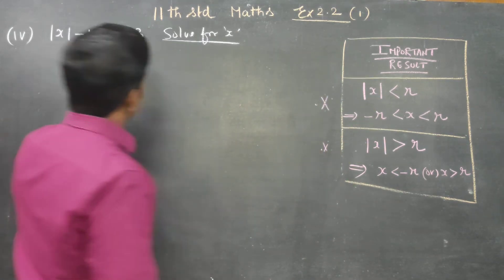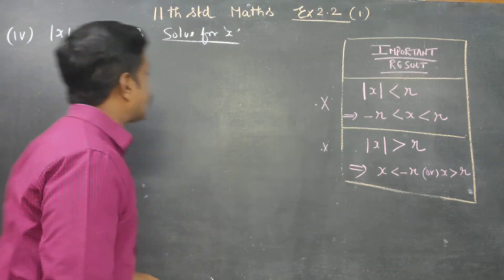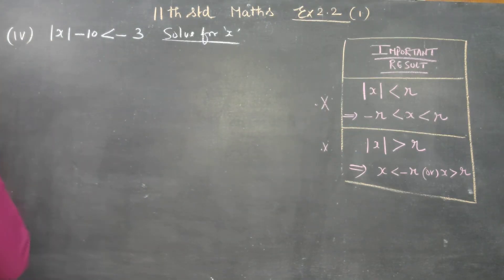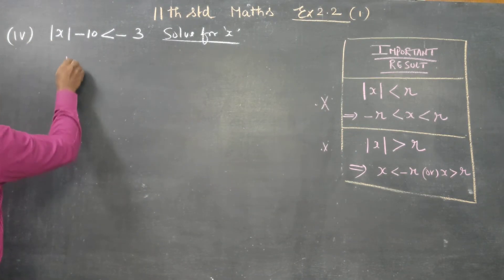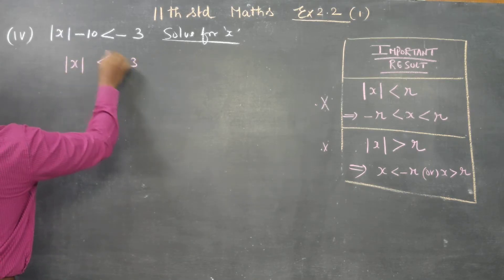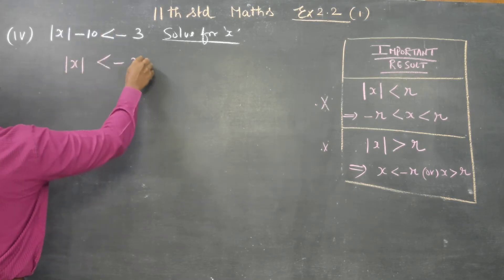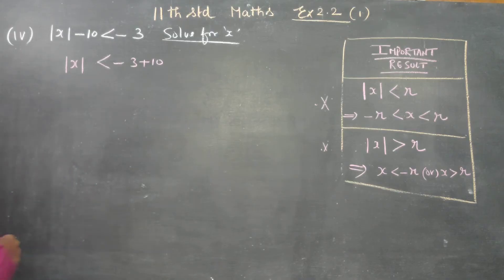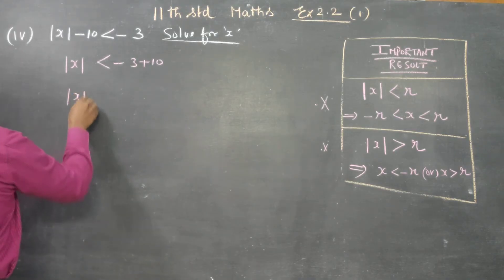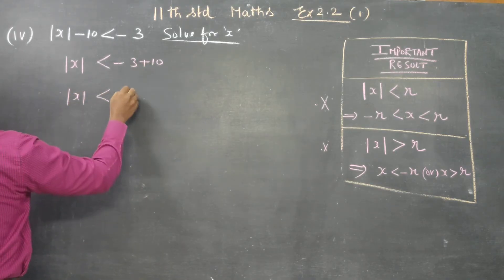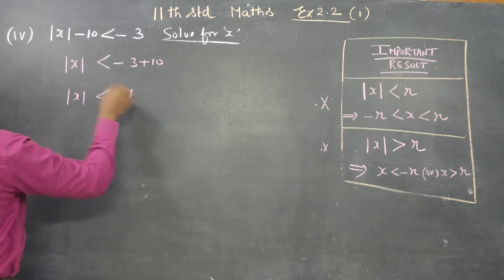Moving to the problem: the absolute value of x minus 3 is less than 10. This simplifies — 10 minus 3 is 7 — so the absolute value of x is less than 7.